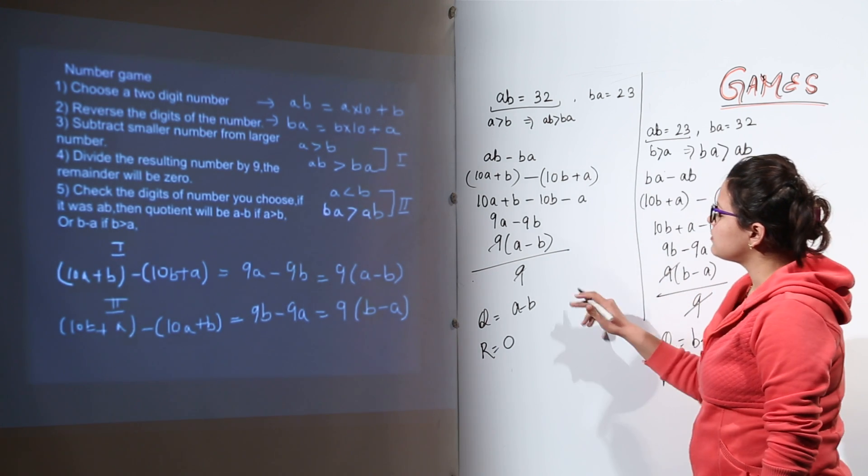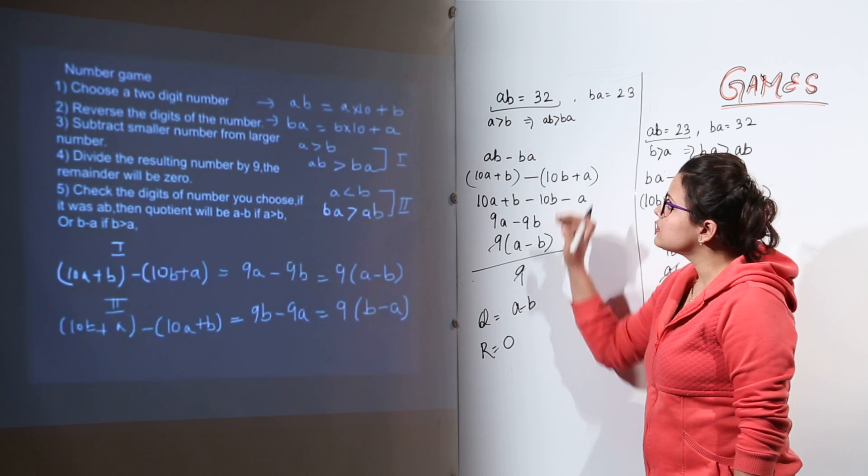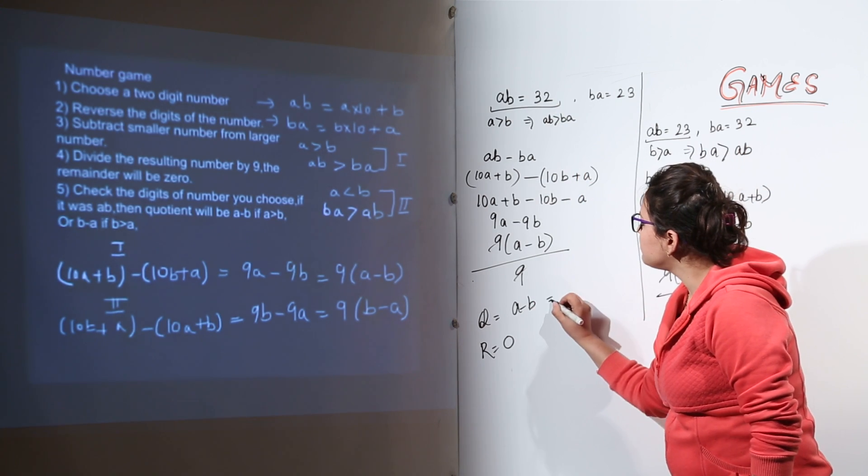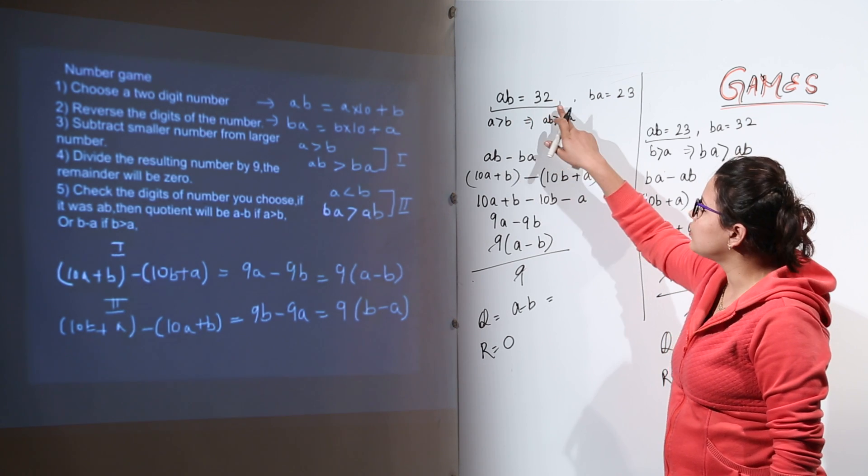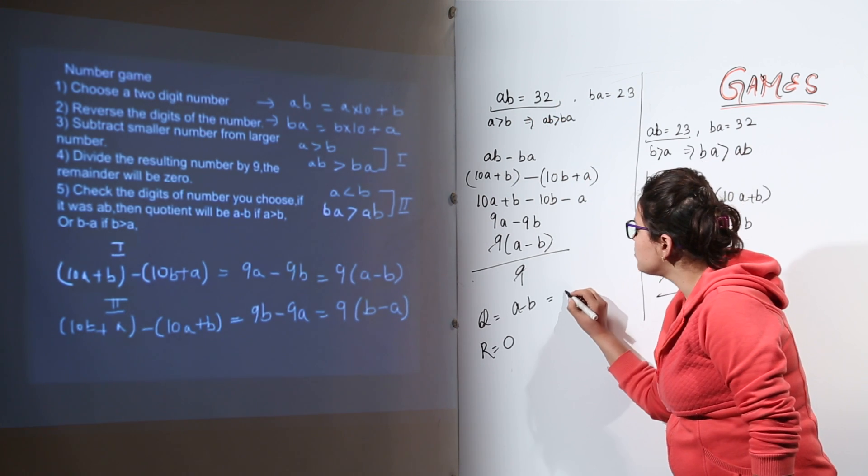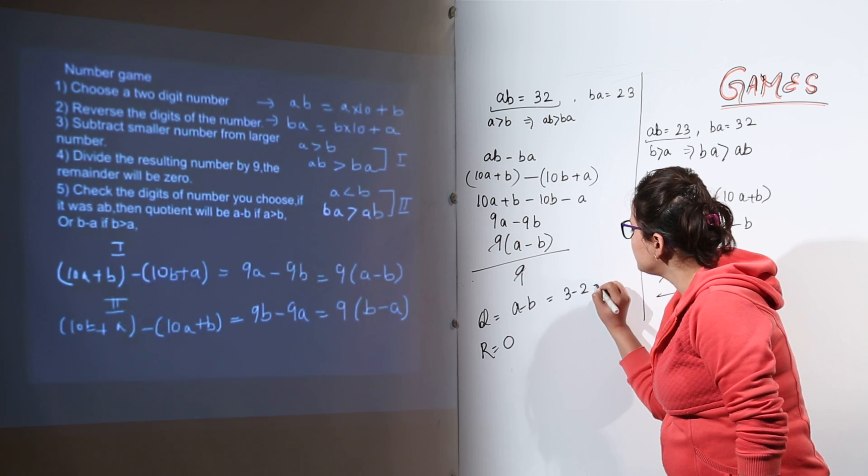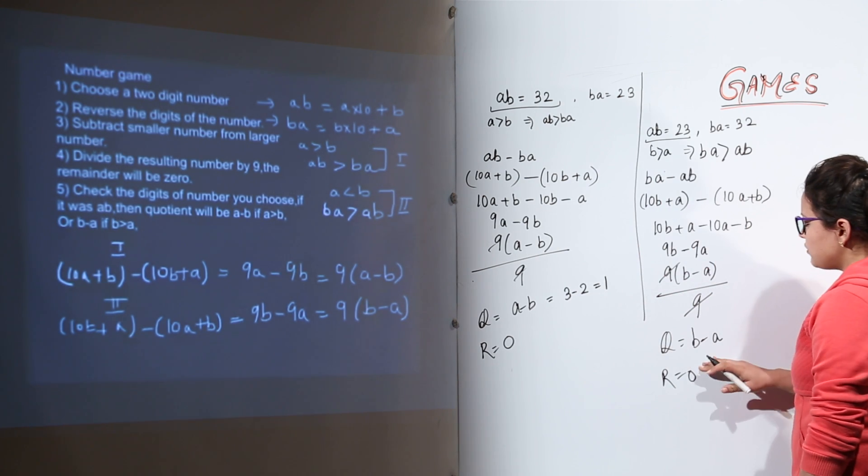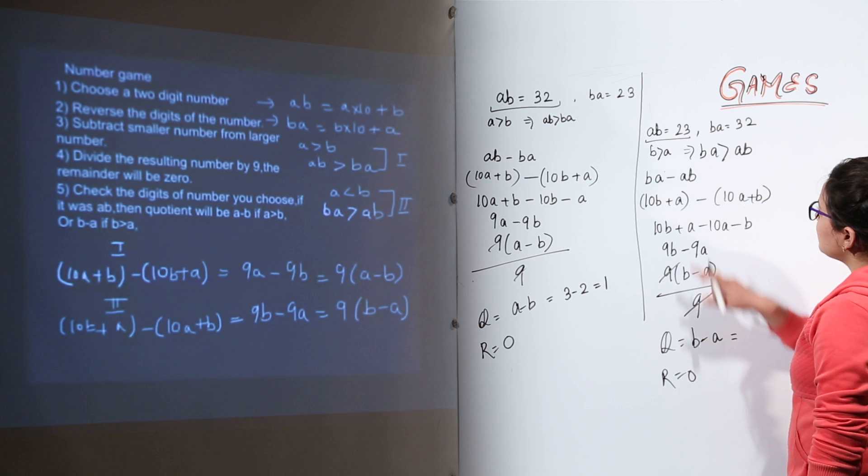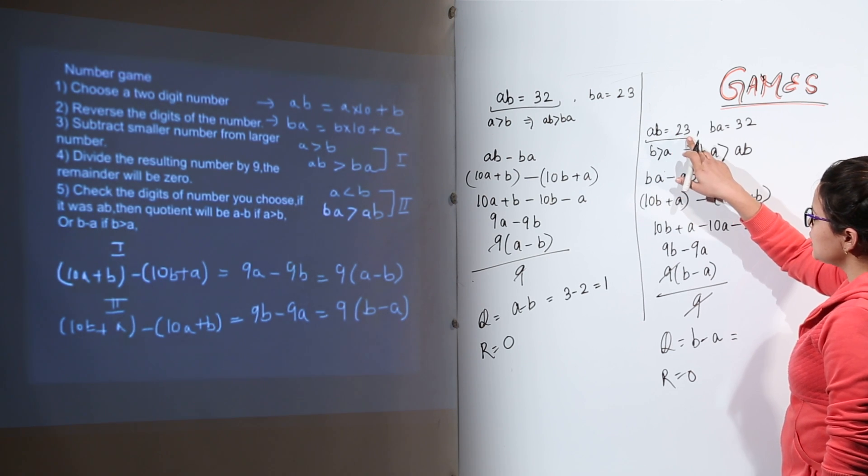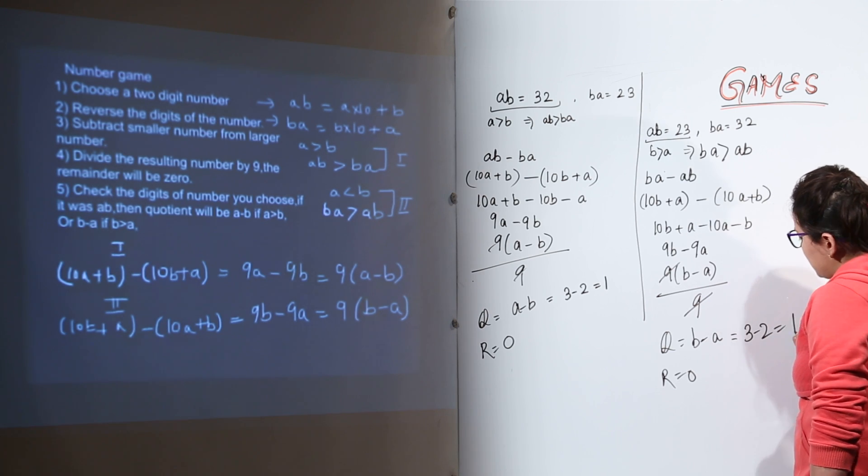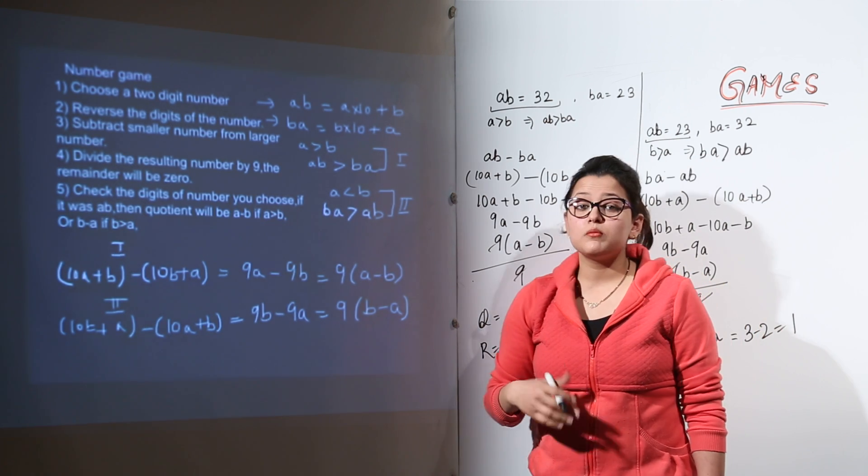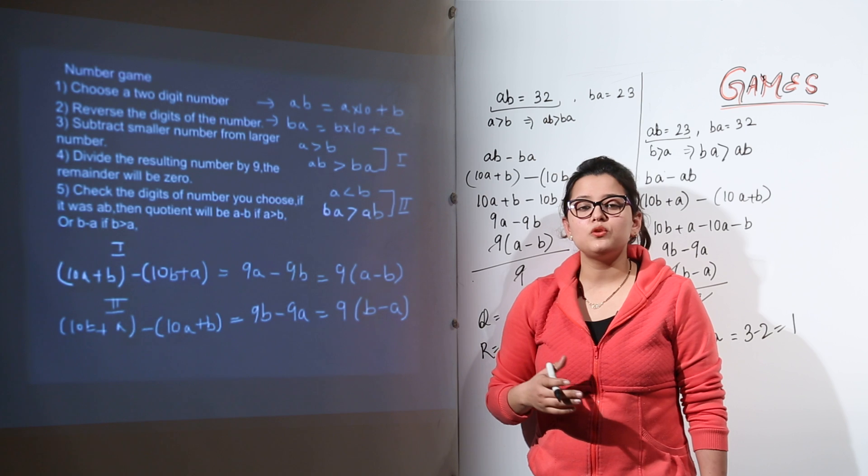Now we can check our numbers and the quotient based on our numbers. That would be A minus B. What was A over here? It was 3 and what about B? It was 2. So the quotient would be 3 minus 2. That is 1. And over here also let us compare. What is B originally? It was 3 and A was 2. So we get 3 minus 2 equal to 1. So that is how number games can be played with any two digit numbers.